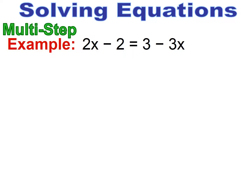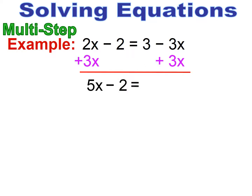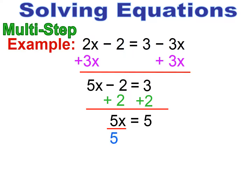Now this is the case where you have the same variable but on different sides of the equal sign. Whenever they're on different sides, you can't simply combine — you need to move, and whenever you move you have to do the opposite. It doesn't matter which direction you move, it just matters that you get it to one side. I'm choosing to move the 3x over to the 2x side. Because it's minus 3x, the opposite is add 3x — I add 3x to both sides and I'm left with 5x minus 2 equals 3. Now I have a two-step equation: I add 2 first, then divide both sides by 5, and x equals 1.